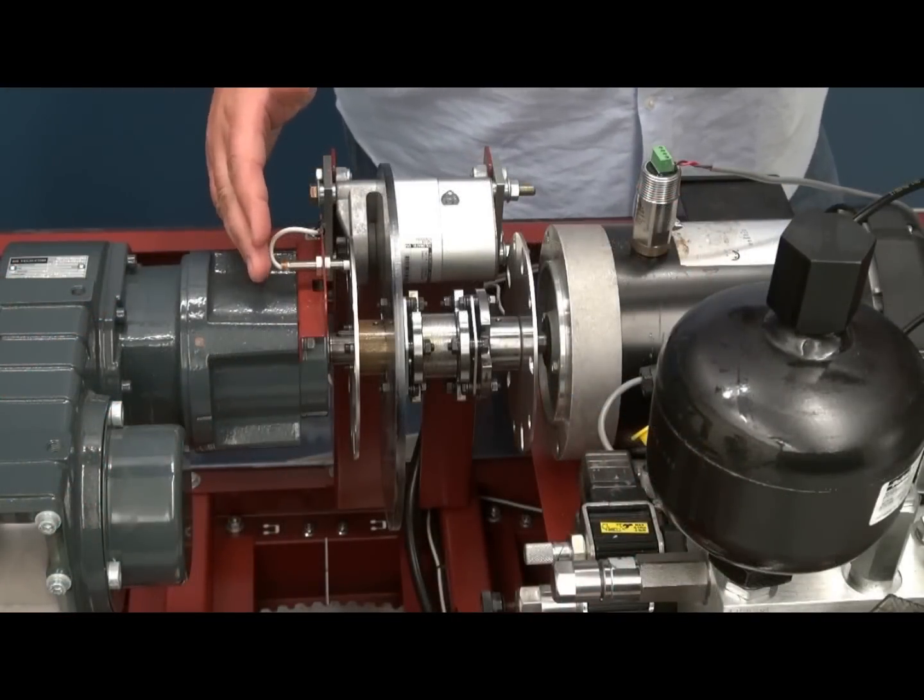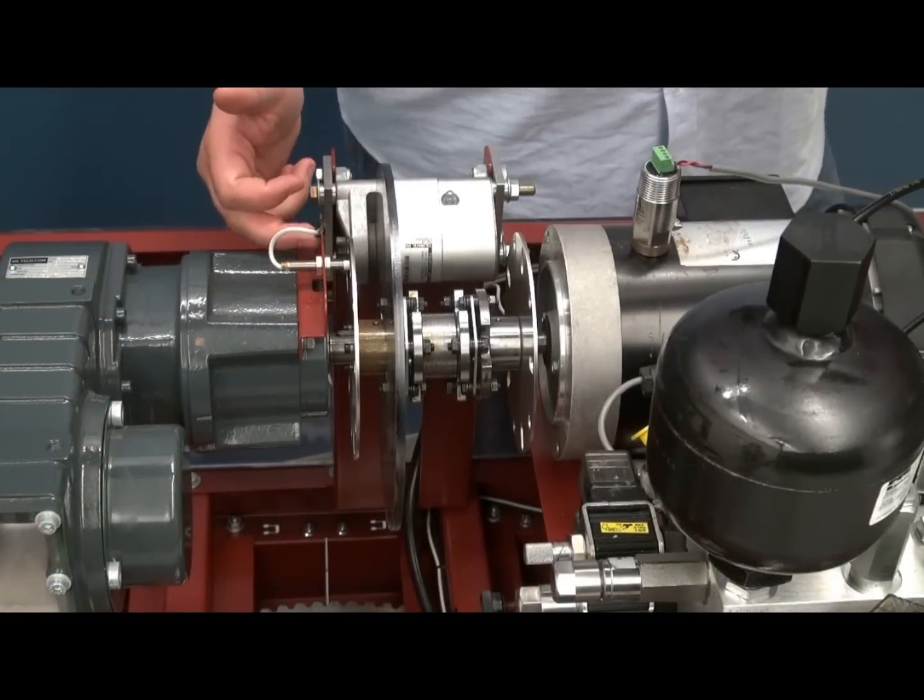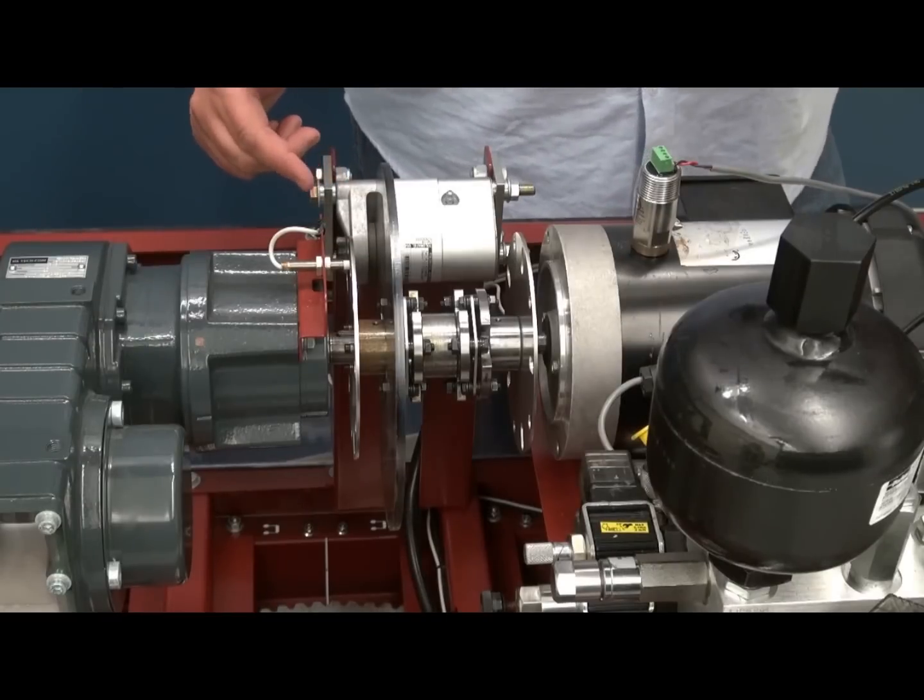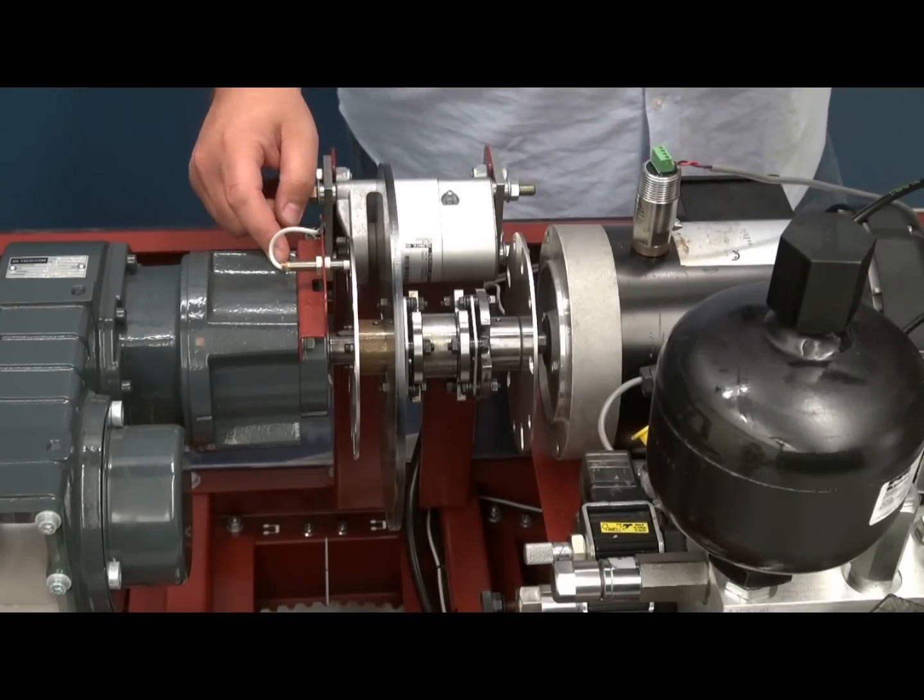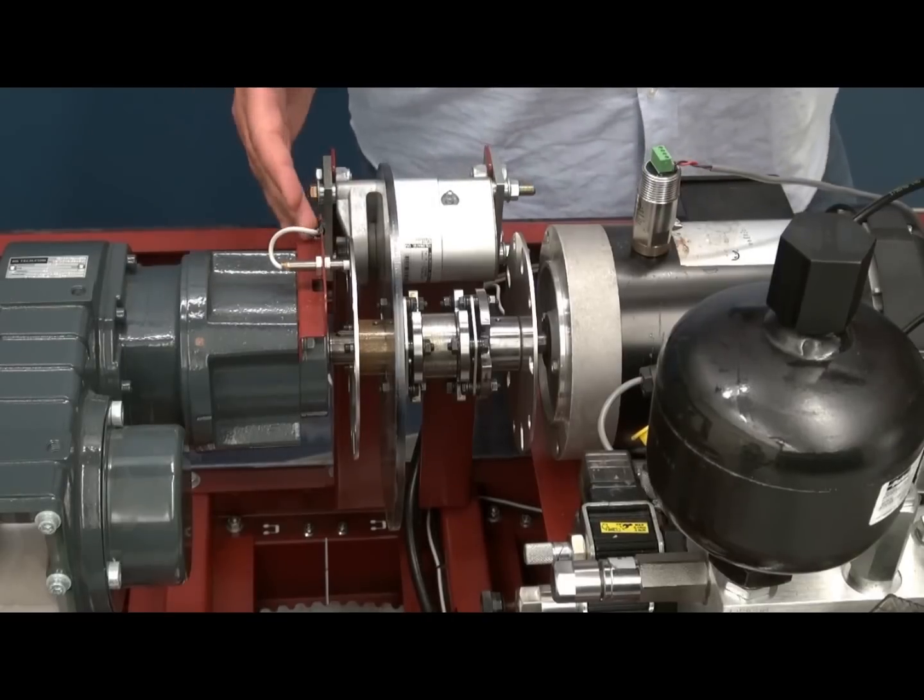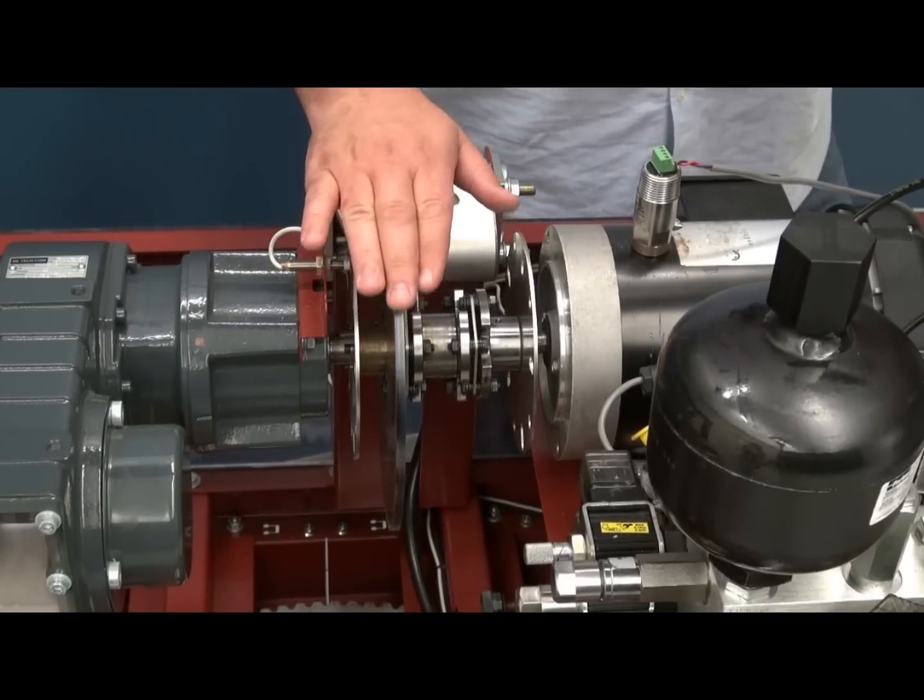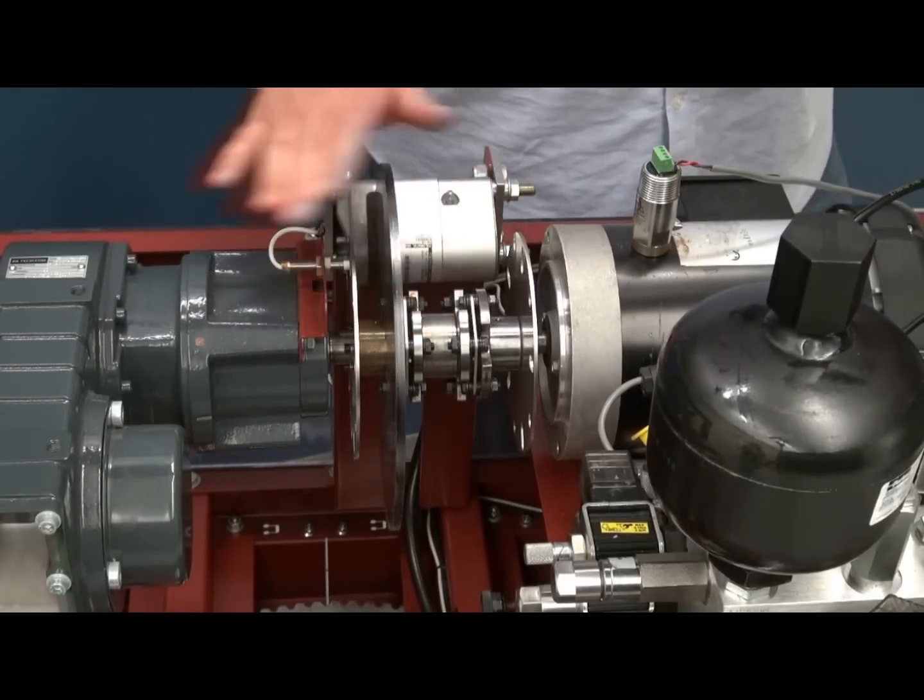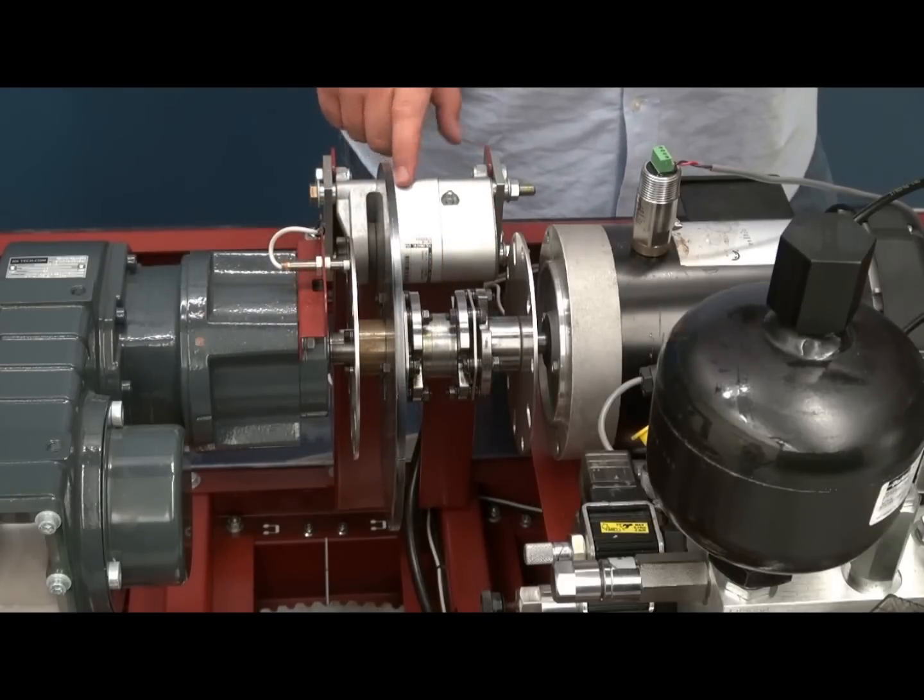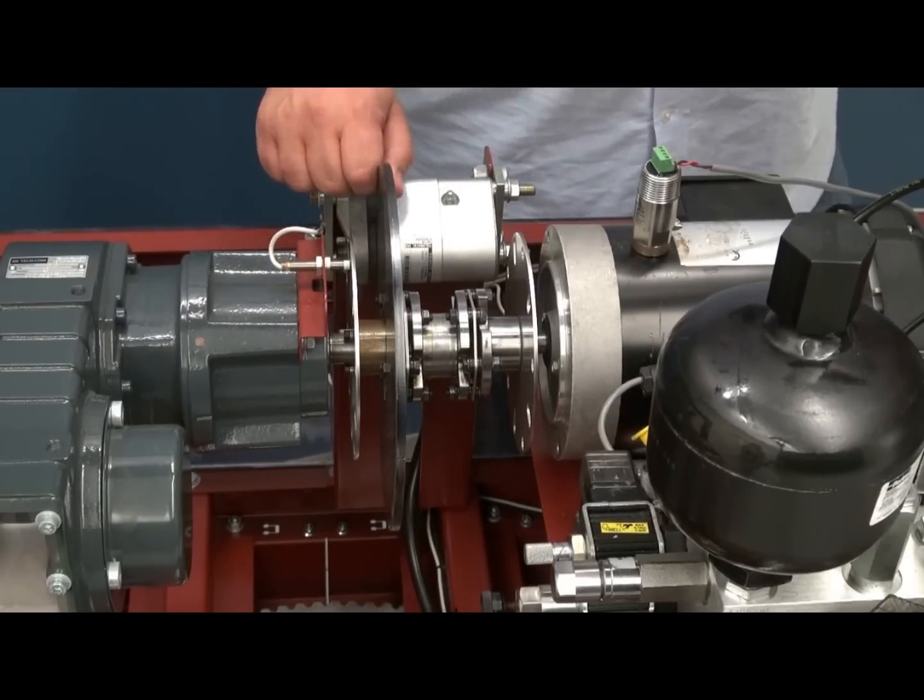When we exit the gearbox, the first thing we do is to measure the actual speed on the high speed side of the drivetrain with an inductive proximity switch. Then we have the main part between the gearbox and the generator, which is the disc brake, and then we have a double acting hydraulic brake that will break the disc and then break the whole drivetrain in case of emergencies or maintenance to be performed by a technician.